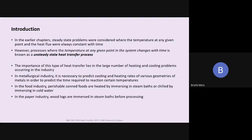Where is unsteady state heat transfer important? Industrially, there are several heating and cooling problems where heat transfer is essentially unsteady state in nature. For example, in iron and steel or metallurgical industries, there is the quenching process — you take a very hot body and suddenly dip it in very cold water or air so that the temperature comes down very quickly. There is not enough time to reach steady state. We have to find out the time taken for the body's temperature to come down to a certain value or to get heated up to a certain value.